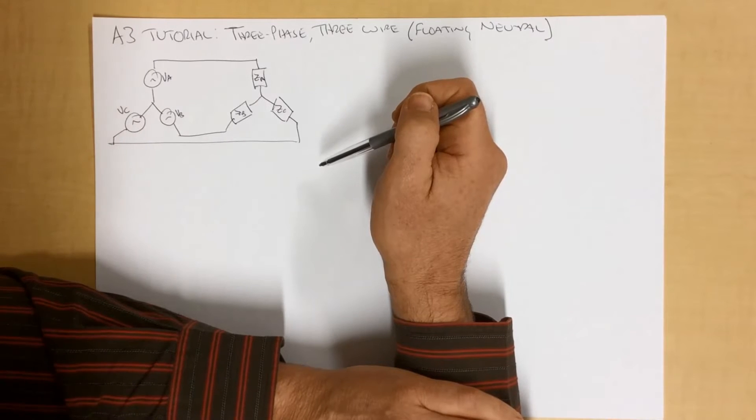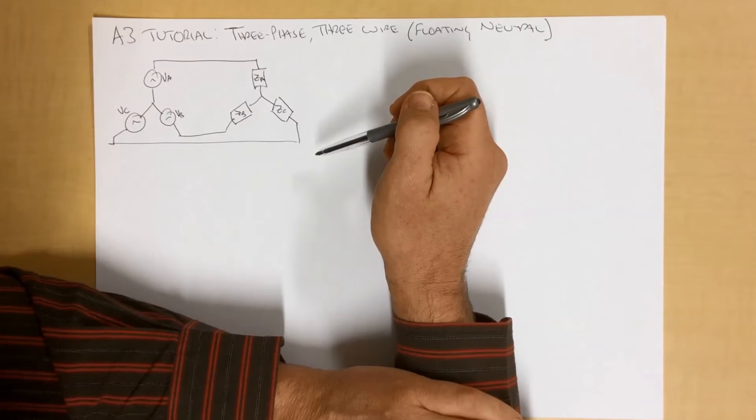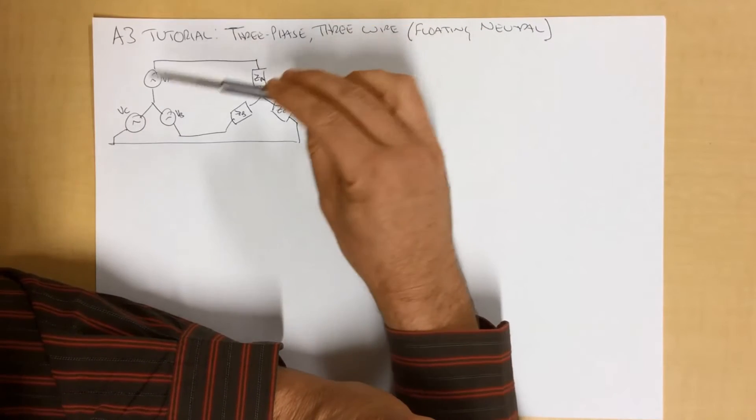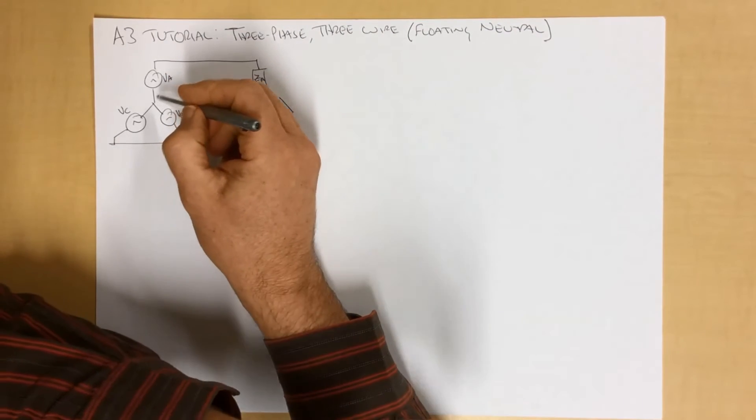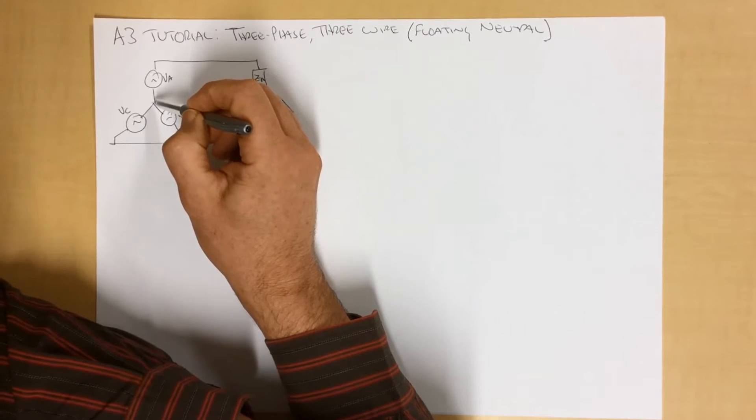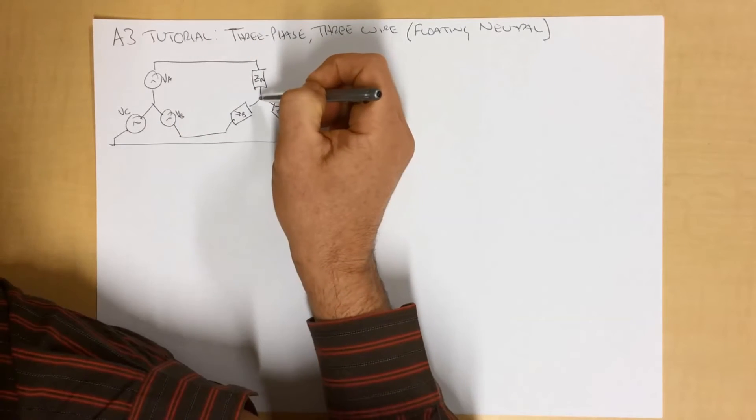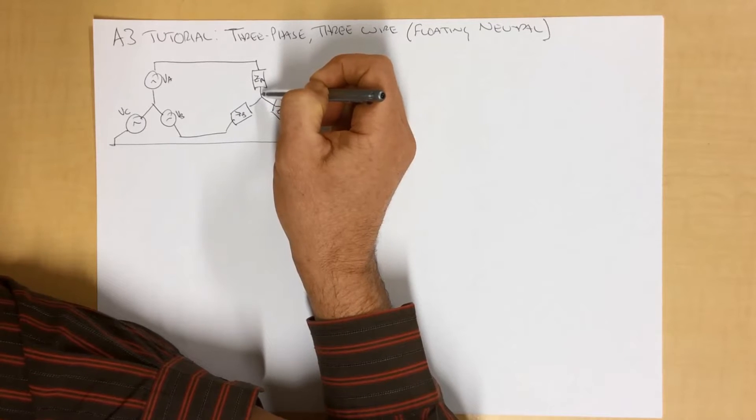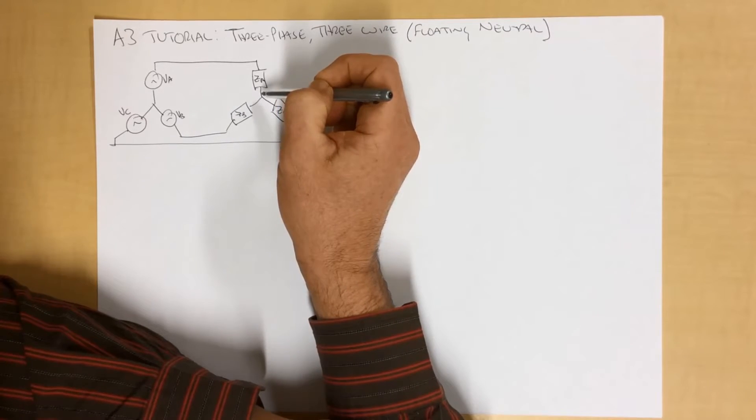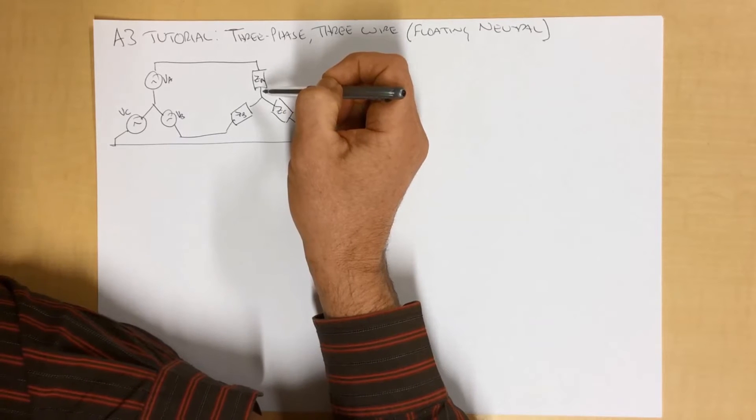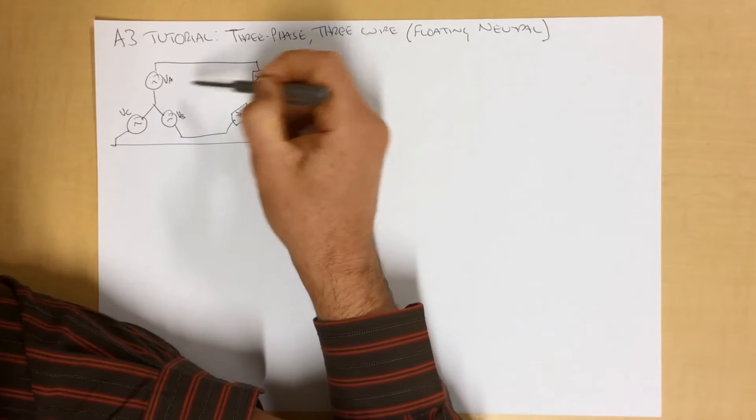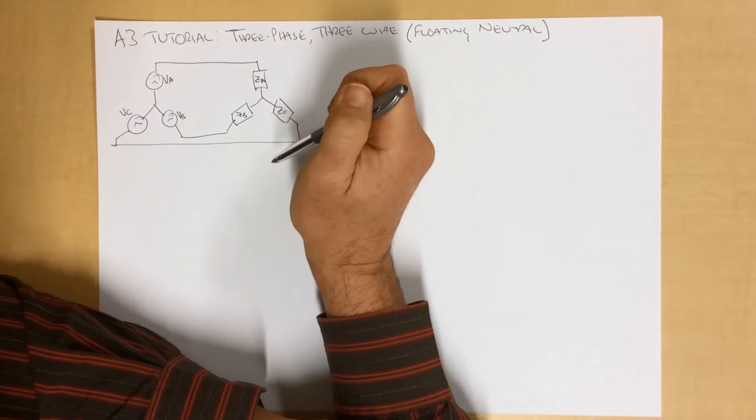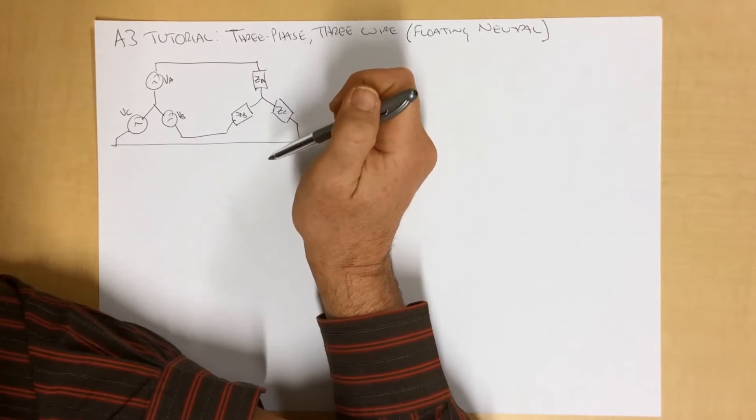Now a commonly misunderstood or misassumed thing is that the neutral point here, which is often tied to ground if it's a transformer or something like that, this point here, a lot of people assume is the same voltage as this point here. That is not always the case. In fact, it usually is not the case unless this is an idealized system. If it's a perfectly ideal system and everything's perfectly balanced, then yeah, sure, they will be the same. But that's more through coincidence than actual reality.